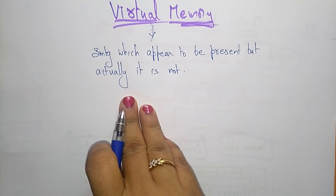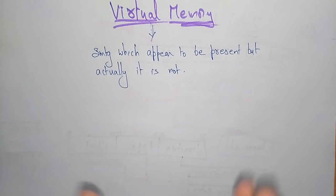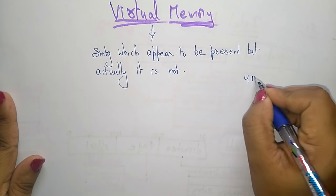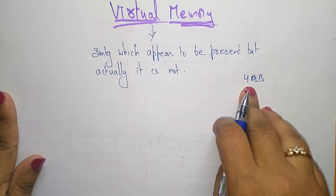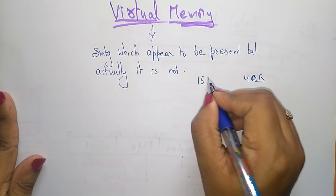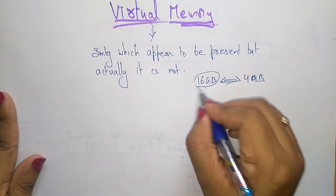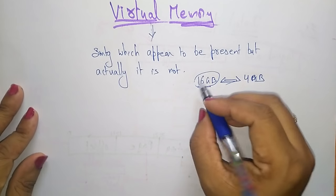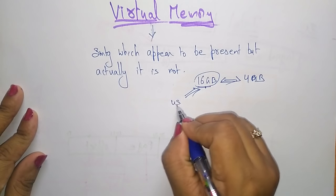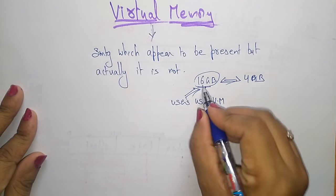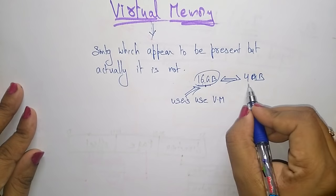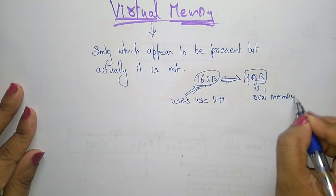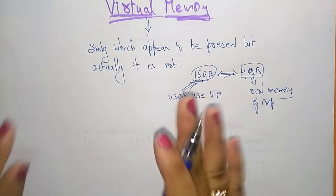The virtual memory technique allows users to use more memory for a program than the real memory of a computer. Suppose the real memory, that is the main memory, is 4 GB, but virtual memory can be about 16 GB like that. So it is not real — something which appears to be present but actually it is not. Users use virtual memory because it is more than the real memory of the computer, which is the main memory of the computer.